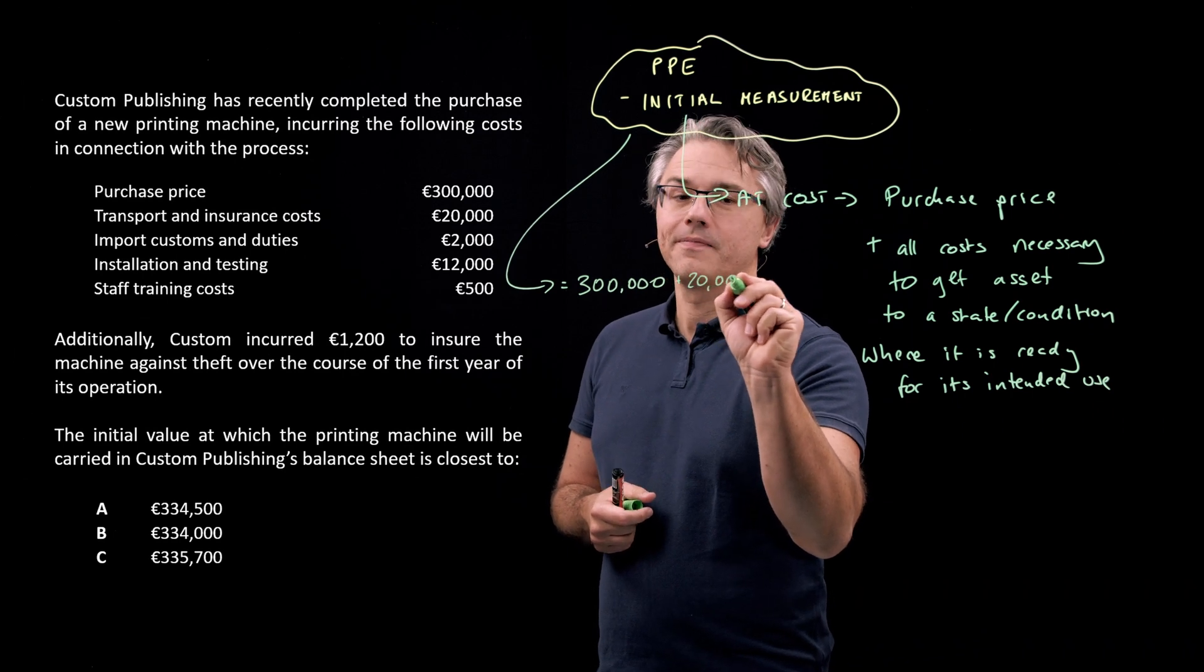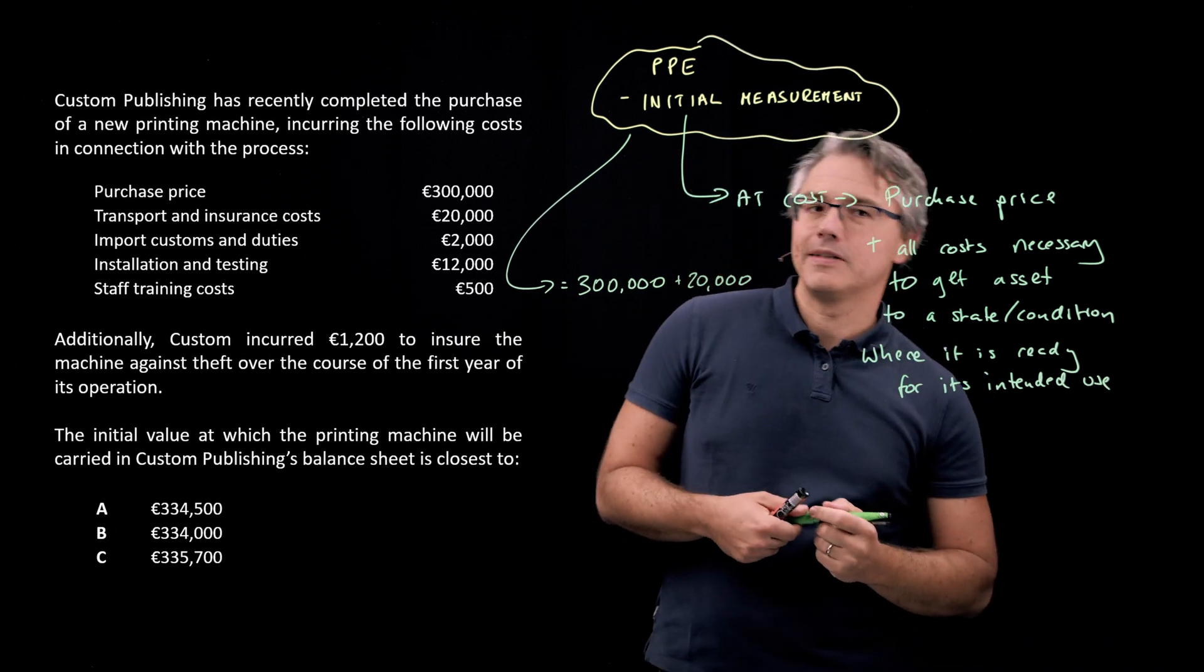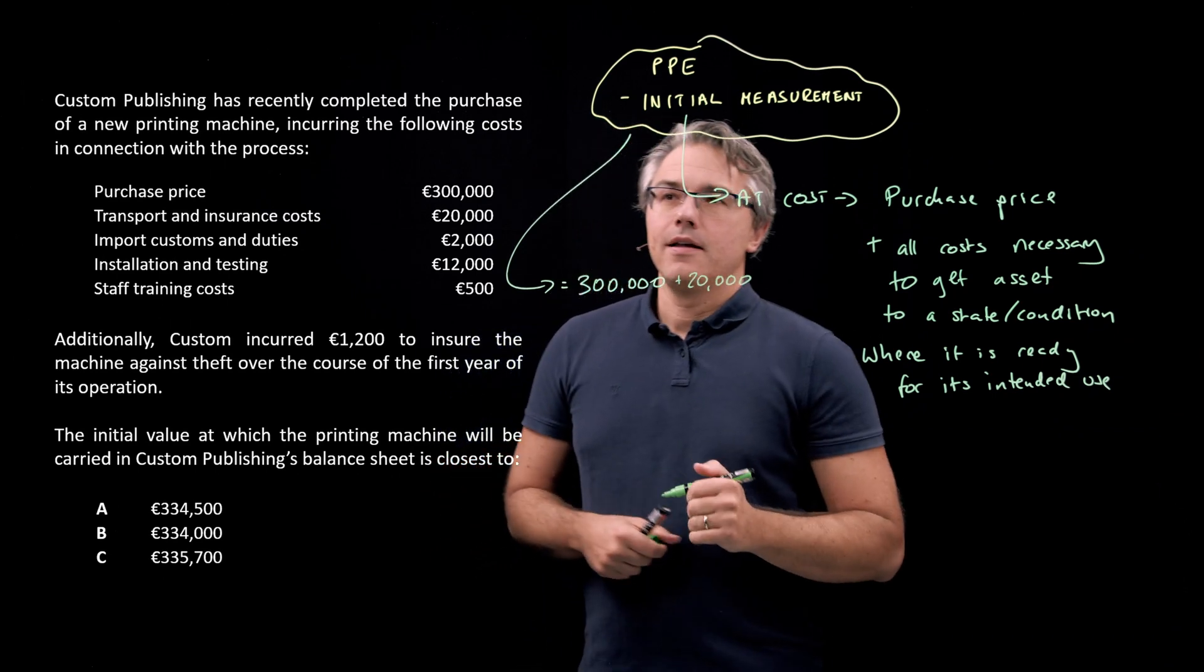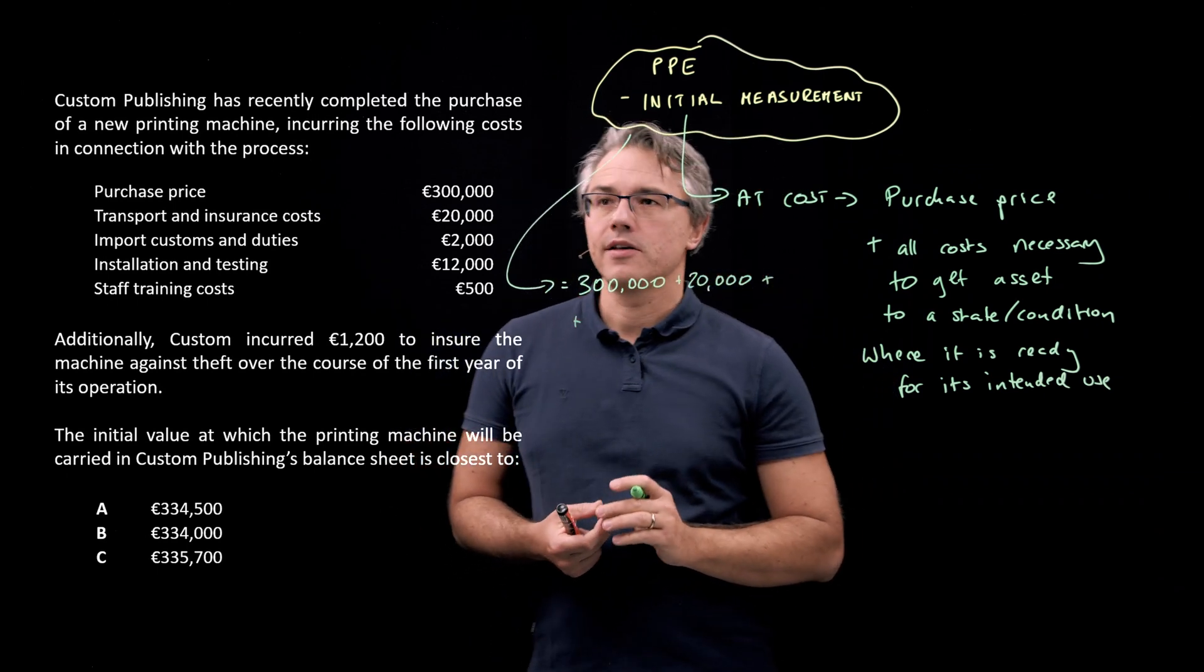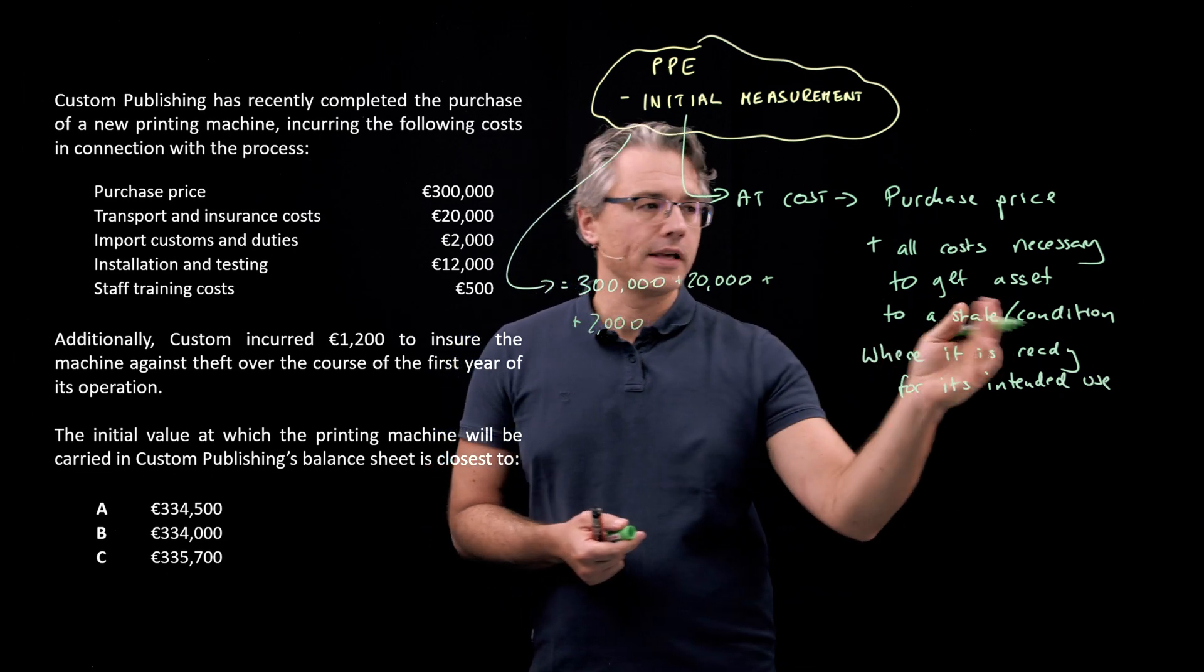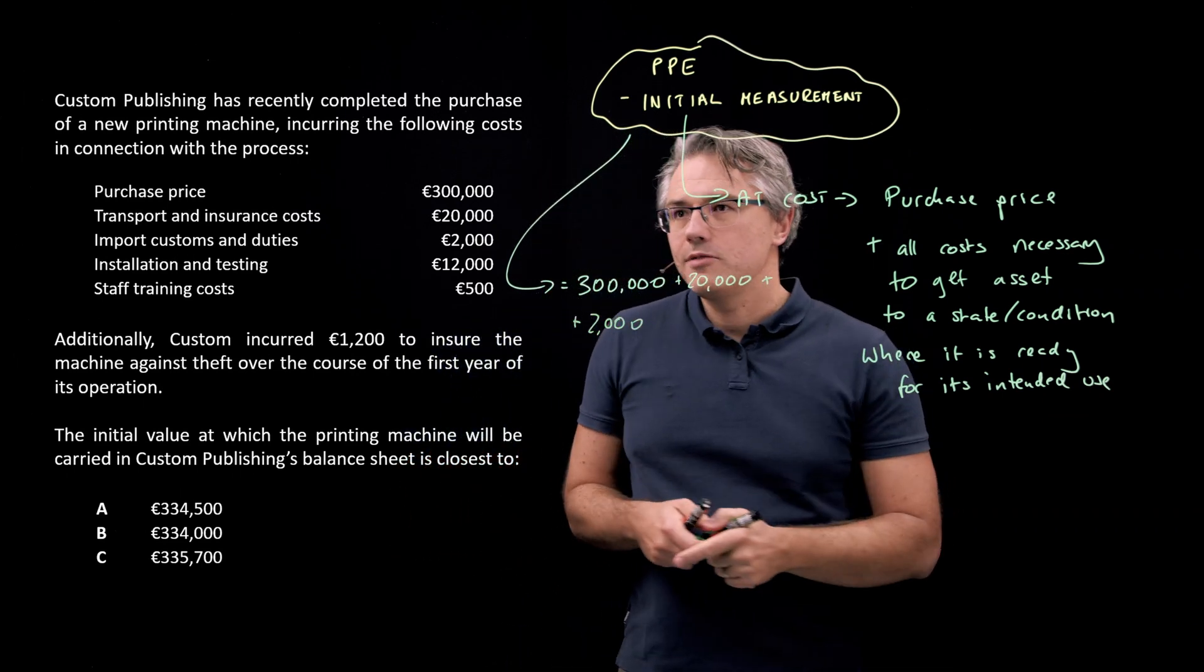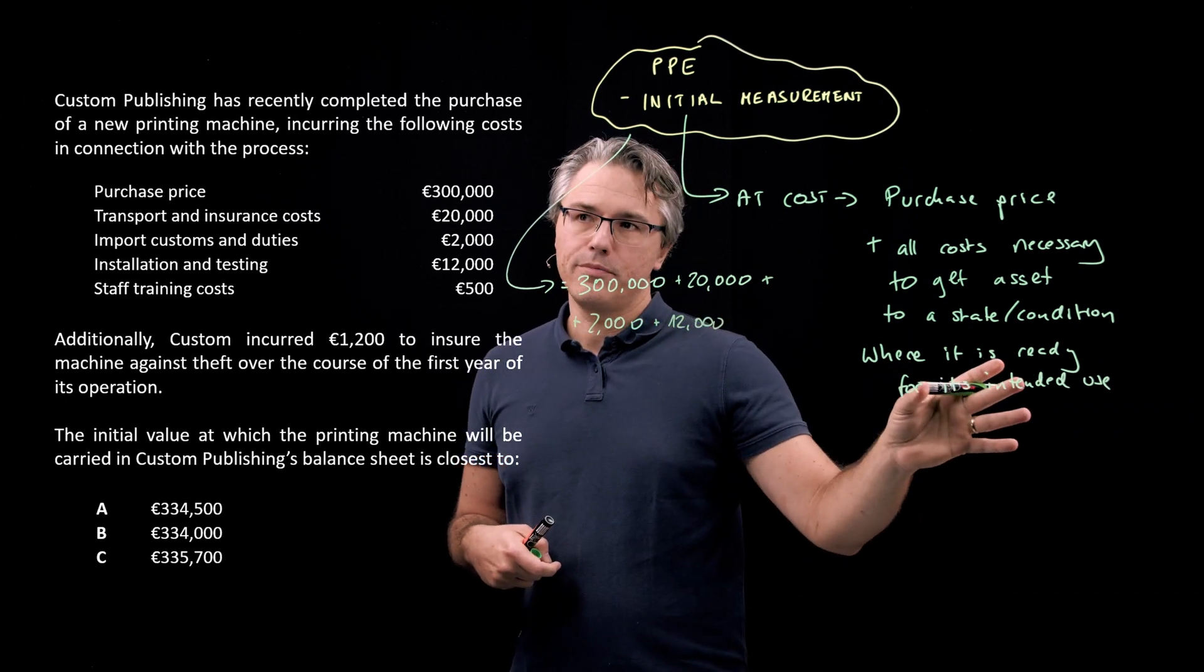And if insurance is a part of the process, you typically insure expensive machinery during the transport process, then we include this as well. Now, anything that was incurred at the border, so customs and duties, that's also part of bringing or getting the asset to a conditional state where it's ready for its intended use. The machine had to be installed and tested in order to work properly.